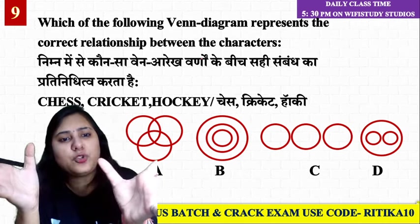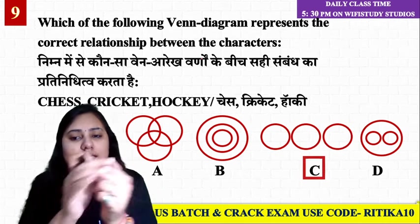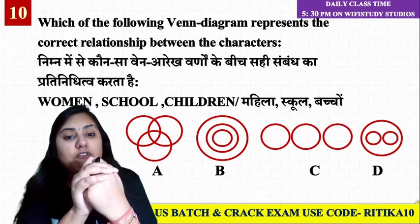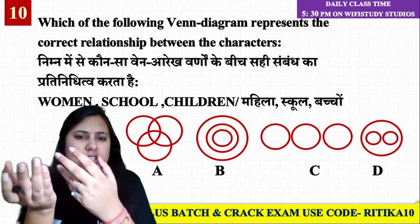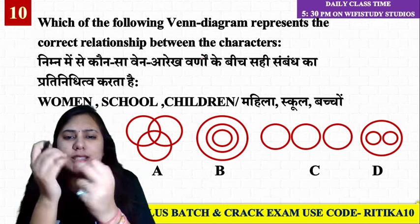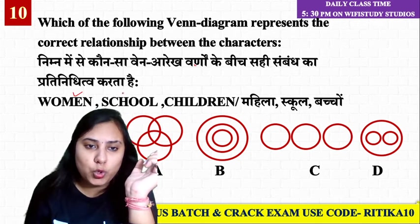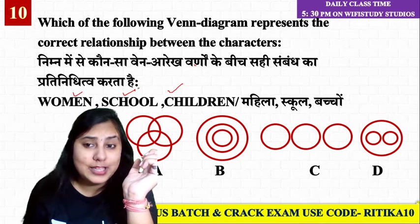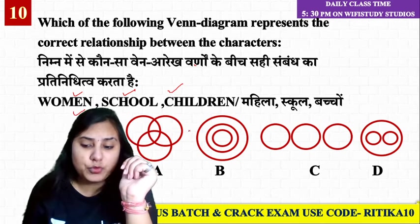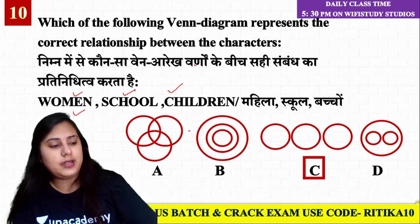Like Cricket, Chess, Hockey — these are all games but have no relation to each other. Another example: Women, School, Children. Do all school-goers have to be children? No. What is the relationship between the three? The answer is C.